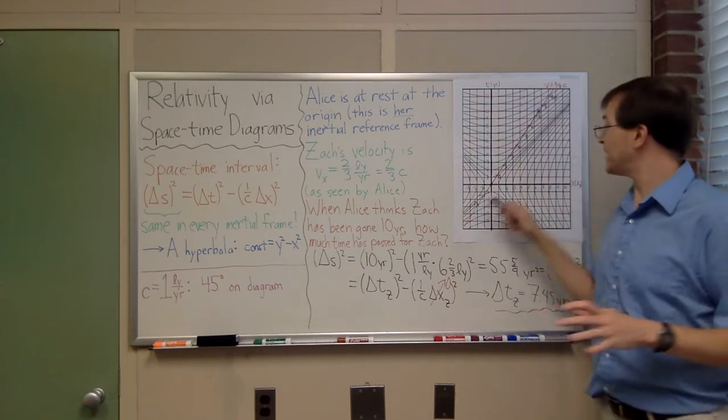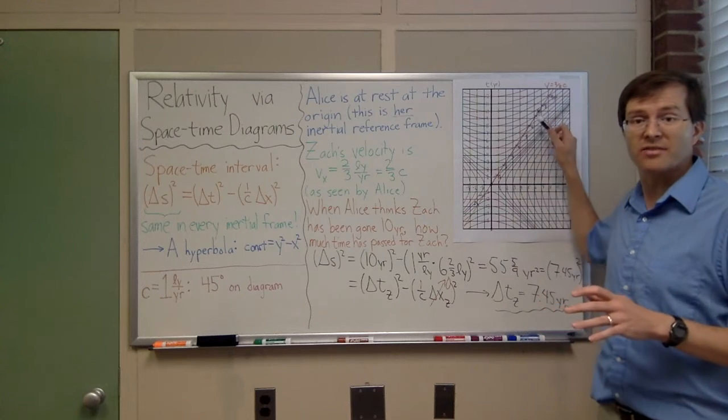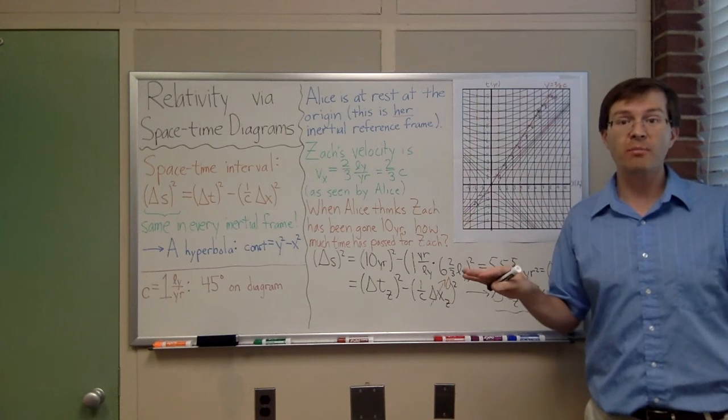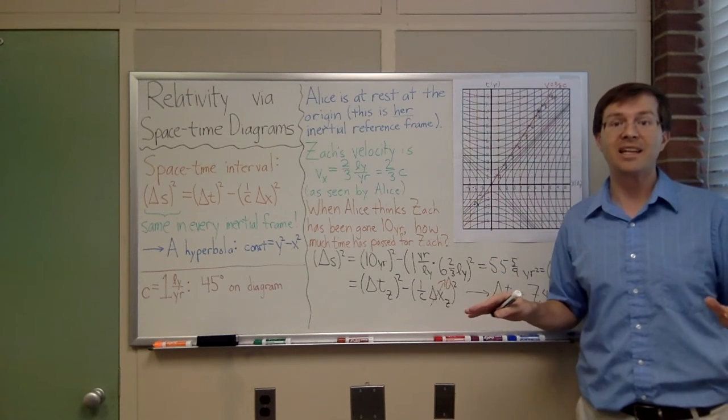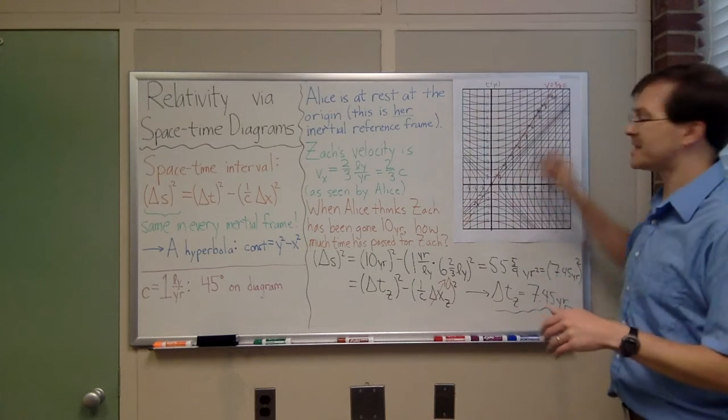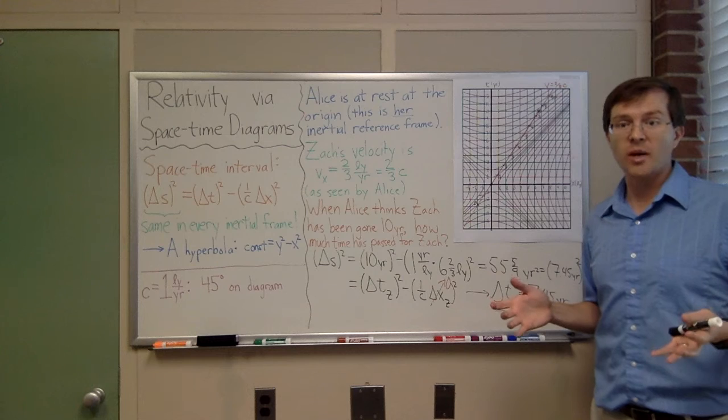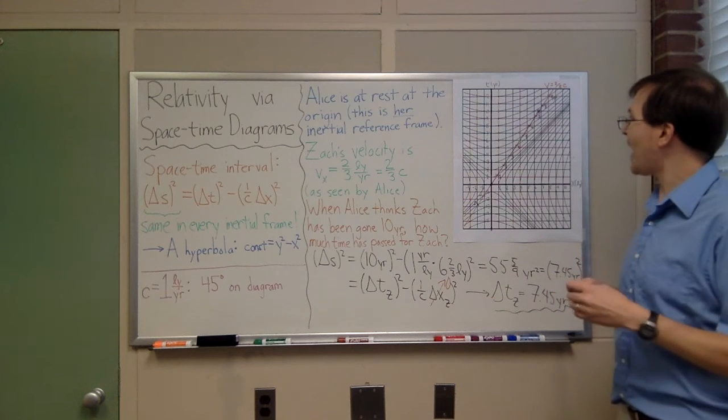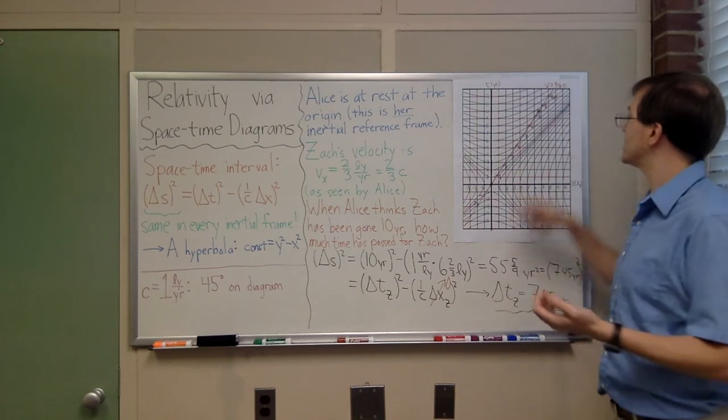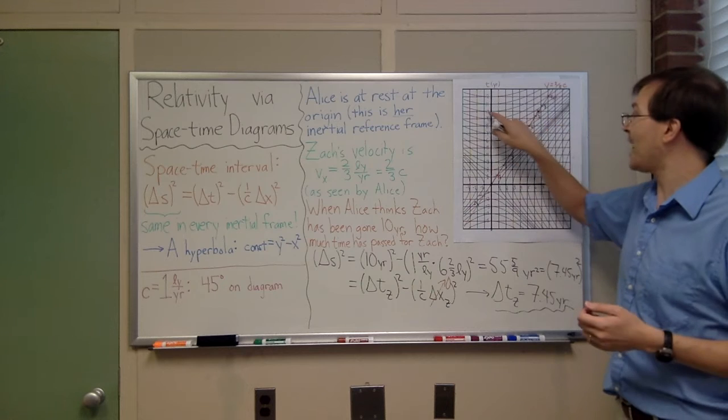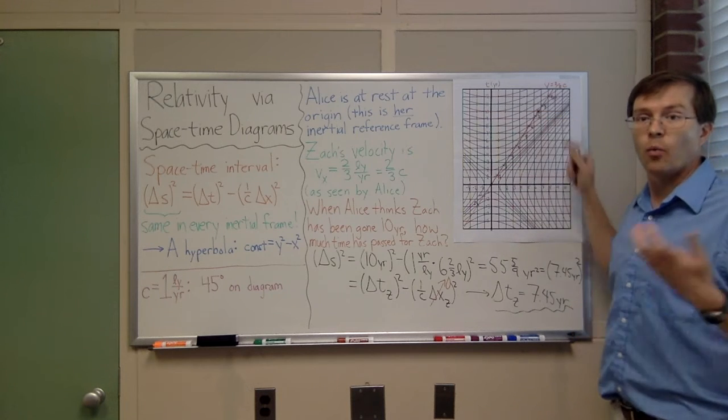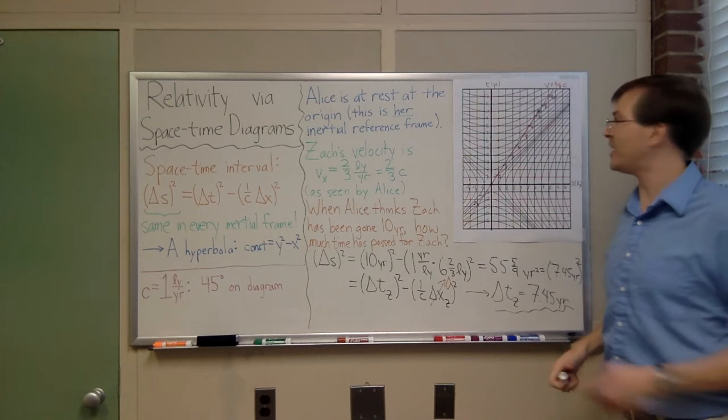Now the important thing is, now that I've calibrated Zach's experience of time, I'm going to ignore the hyperbolas forever more. I'm not going to do anything else with hyperbolas. I've calibrated Zach's experience of time, and I'm all set. So now I ask the question, at what time, what time would Zach have measured this event to be? The event that Alice thought was 10 years after Zach had left. What time does Zach measure for that event?